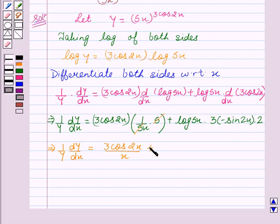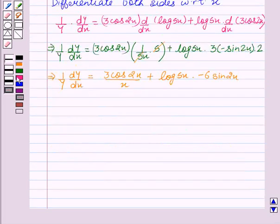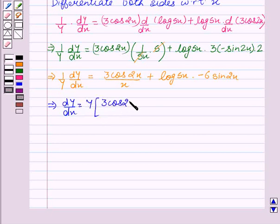This implies dy/dx equals y times [3cos2x over x minus 6sin2x log 5x].